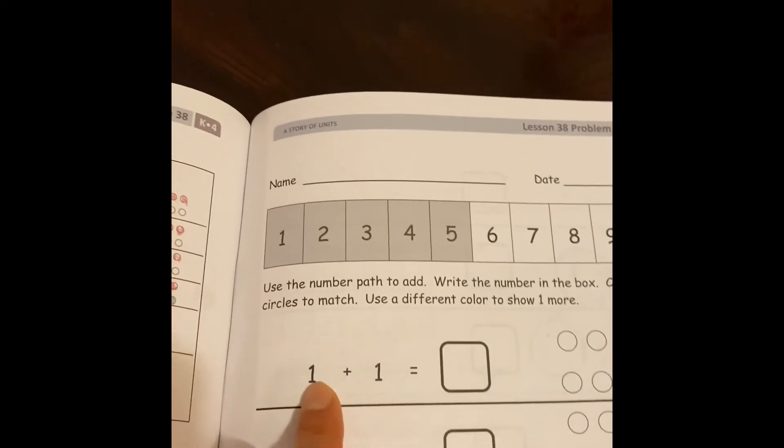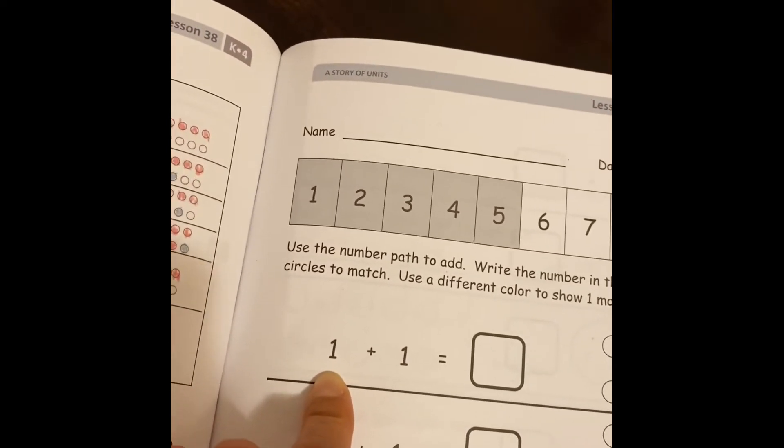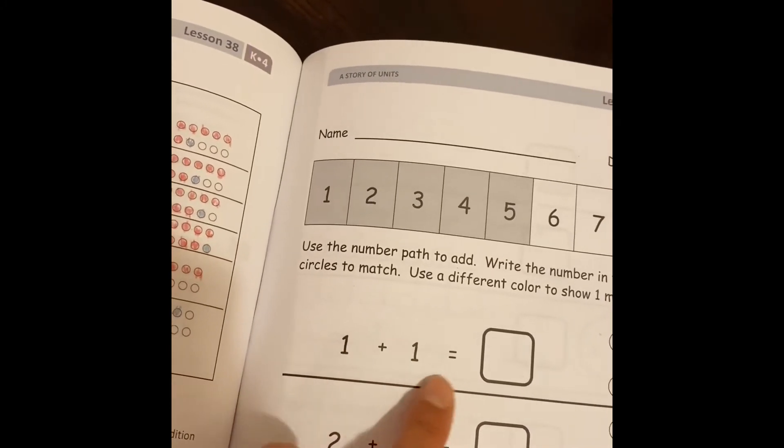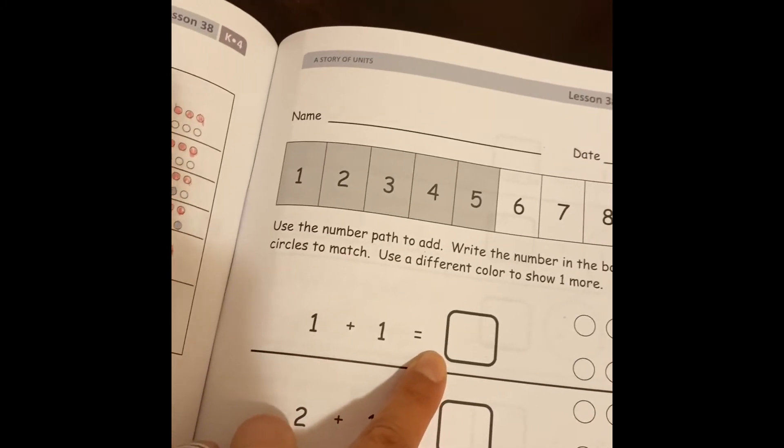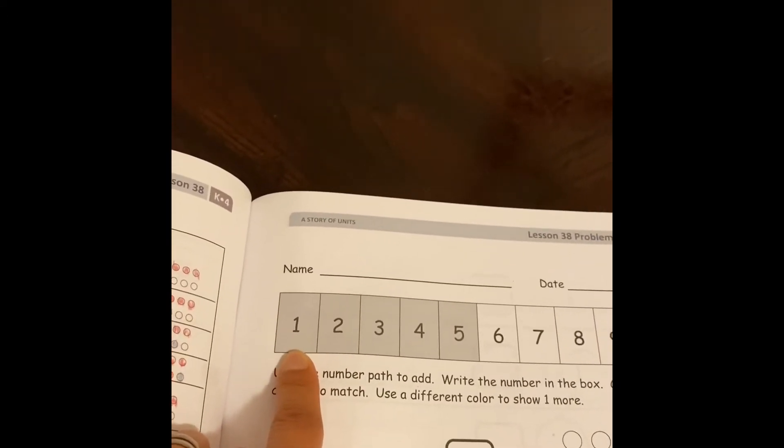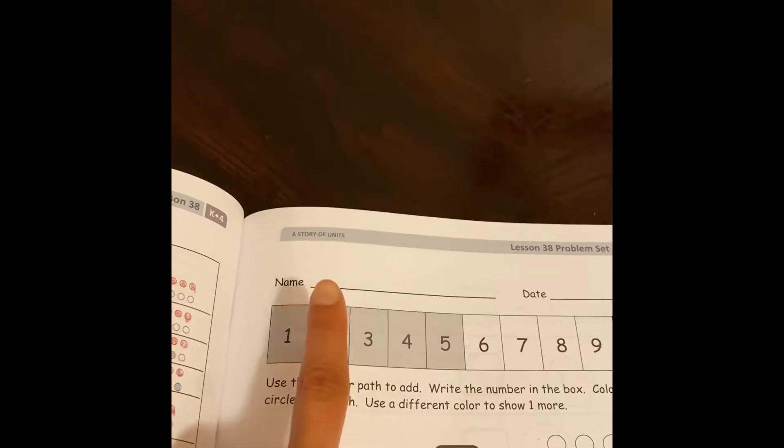So we have, let's read it out, boys and girls. It's what? If you say one plus one equals, you are correct. So let us show that in the number path, okay?